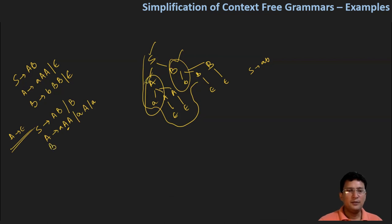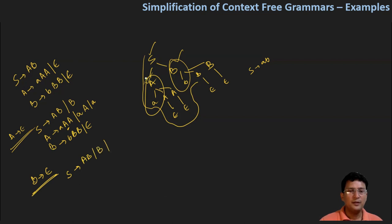The third production: B produces small b, capital B, capital B, and epsilon remains the same. Now we try to remove B produces epsilon. In production S produces A, B, if we place epsilon in place of B, you will remain with A. A produces small a, capital A, capital A. A produces small a, capital A, and small a will remain the same.